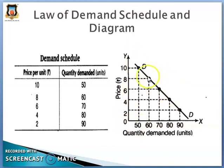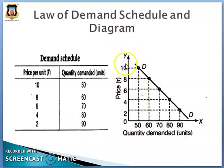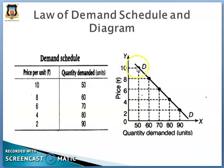We have explained the law of demand with the help of a diagram. In this diagram, on the OX axis we have shown quantity demanded, and on the OY axis we have shown price. The same relationship shown in the table is now expressed by the diagram. When the price is 10 rupees, the quantity demanded is 50 units.